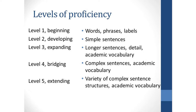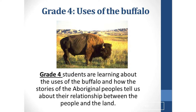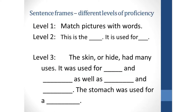For example, in the grade four curriculum, students are learning about the uses of the buffalo and how the stories of the Aboriginal peoples tell us about the relationship between the people and the land. Students are expected to use descriptive language. Some sentence frames for this activity at different levels of proficiency: at level one, students might just match pictures with words. A level two student could create simple sentences such as 'This is the skin; it is used for clothing,' choosing words from a word bank.